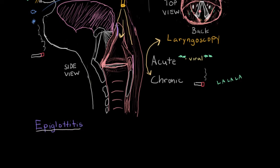The epiglottis is a flap of tissue that sits above the larynx and helps protect the airway. When it becomes swollen, it can potentially obstruct the airway, causing serious consequences such as difficulty breathing. Epiglottitis also causes hoarseness of the voice just like laryngitis, but airway obstruction causing difficulty breathing is the major source of concern.